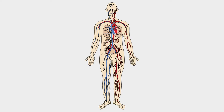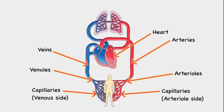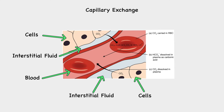Blood flowing from the heart includes oxygen and nutrient-rich blood that flows from the arteries to the arterioles and then to the capillaries. Blood flowing from the tissues back to the heart is deoxygenated and contains waste. This blood flows from the venous side of the capillaries to the venules and veins. Capillary exchange is the movement of substances between the blood and the interstitial fluid, and this exchange occurs through diffusion, transcytosis, and bulk exchange.